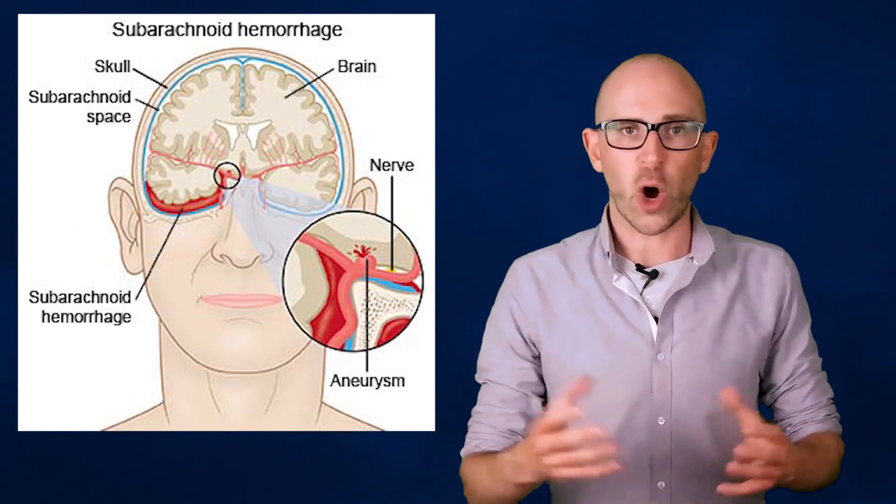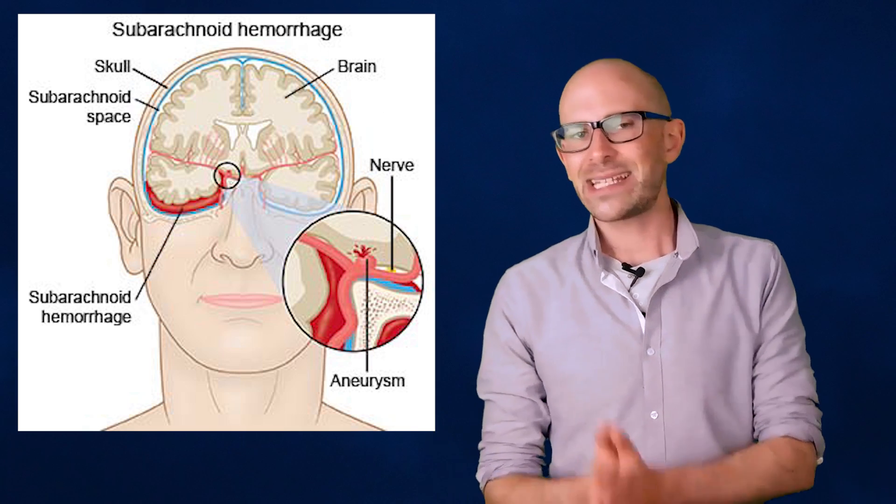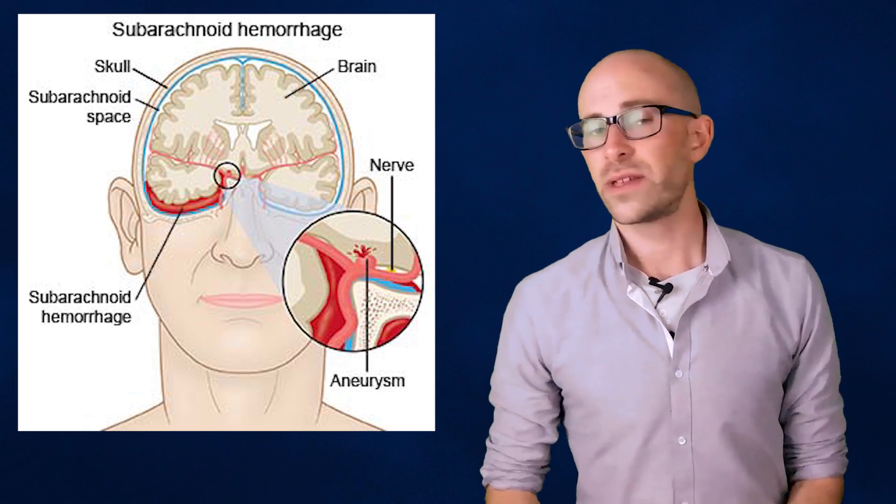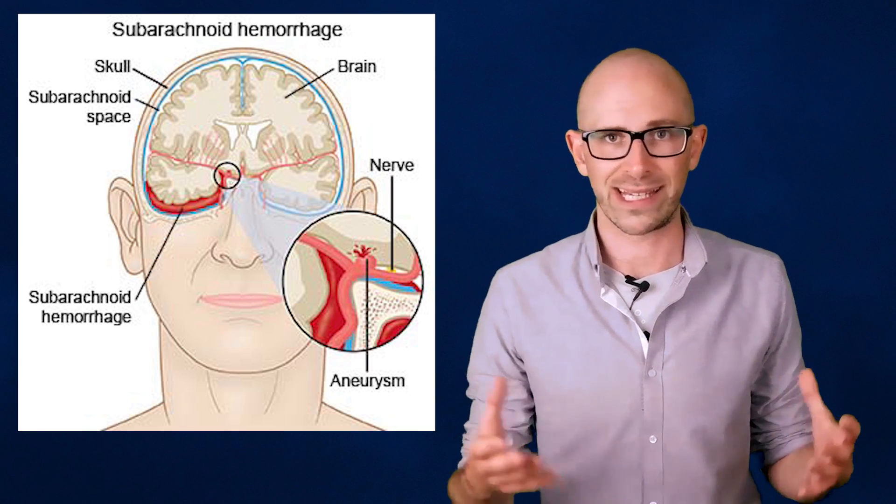Subarachnoid hemorrhage is also a rupture of an artery within the skull. The difference is where the bleed occurs. Instead of happening within the brain itself, it happens in the area surrounding it. The skull does not allow for the blood to escape, so it puts pressure on the brain, causing damage.